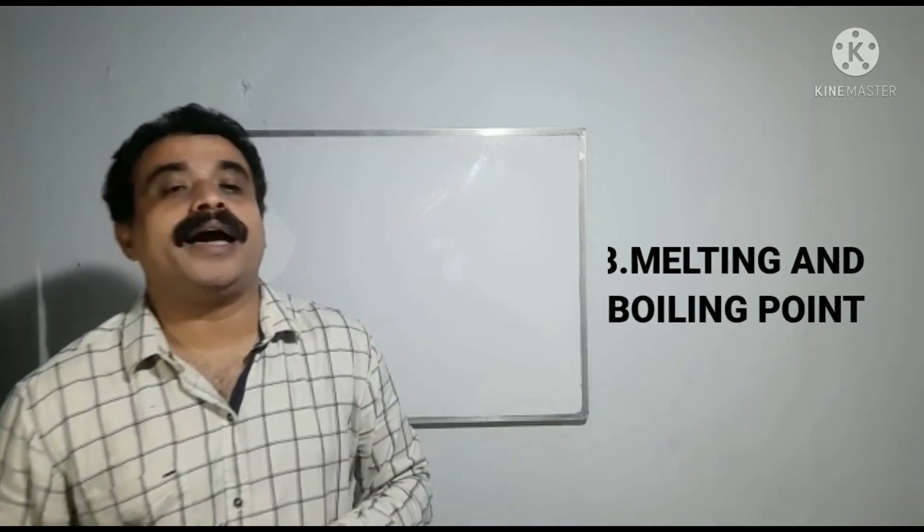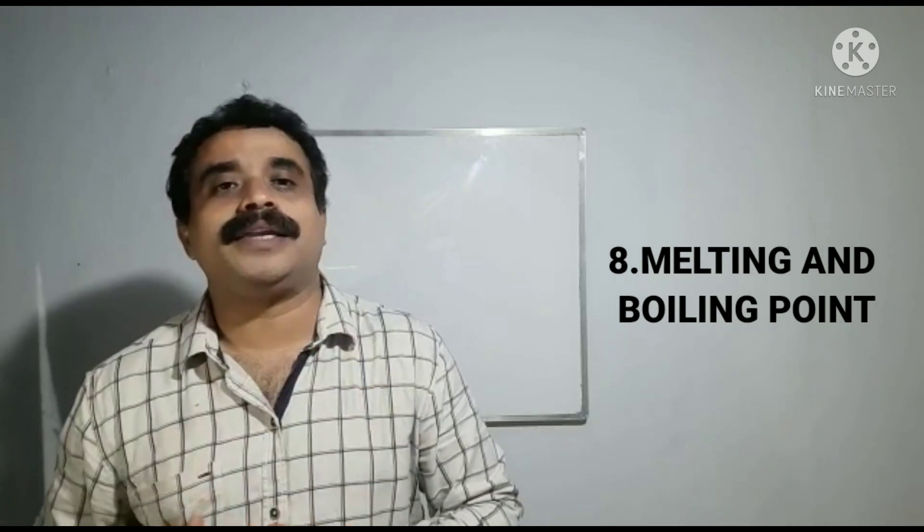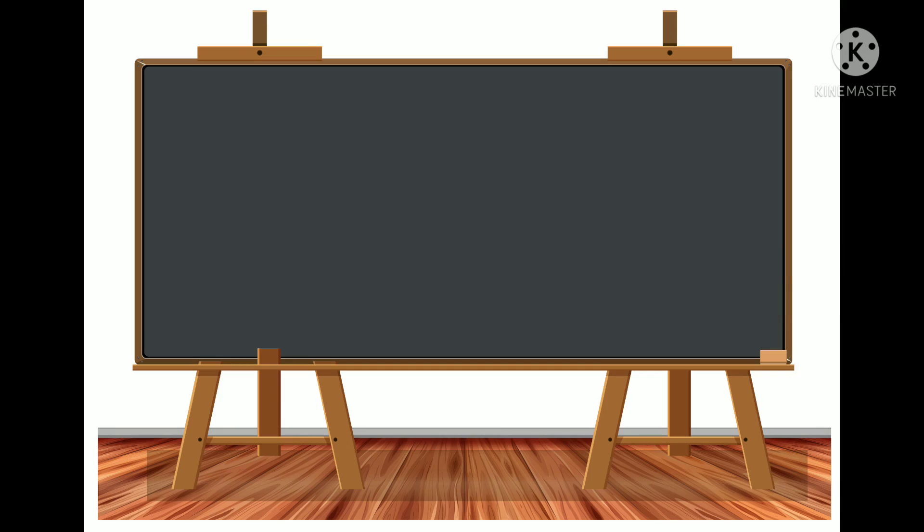Property number eight: melting and boiling point. Metals generally have high melting and boiling points, but metals like sodium and potassium have low melting and boiling points.